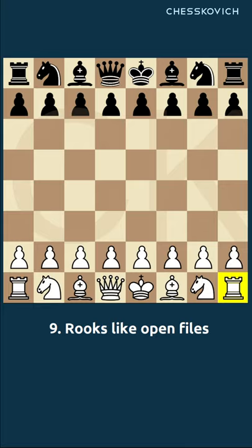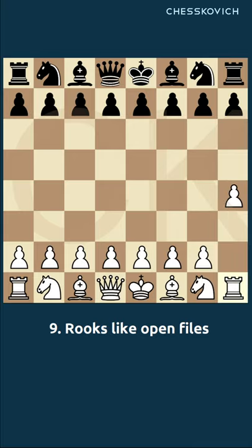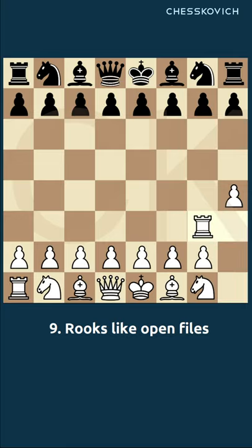...we will have to move the pawn, then probably move the rook and develop it wherever we want. So what's the problem with this? The problem is that we are going to have a bad and weak pawn structure, which won't be able to protect the king.